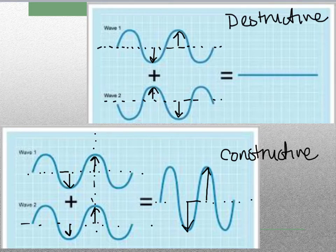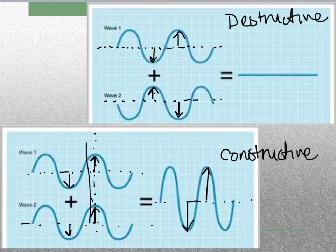We can actually have waves that are not completely destructive but just make the amplitude a little bit smaller, or waves that are not completely constructive and just make it a little bit bigger. They don't always have to perfectly line up — they could be just slightly off and still add up more than before.